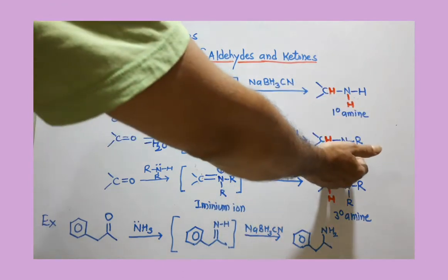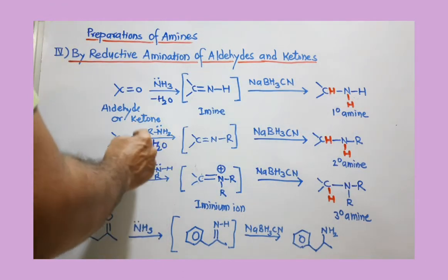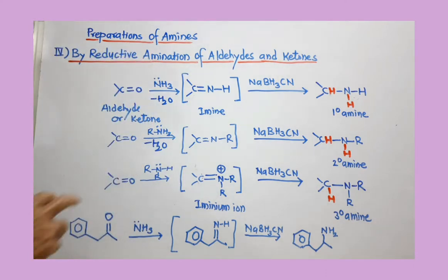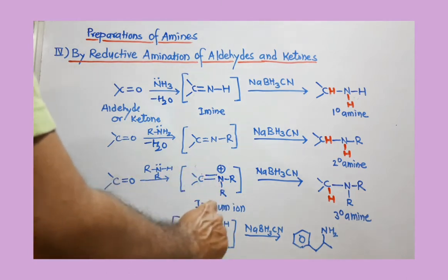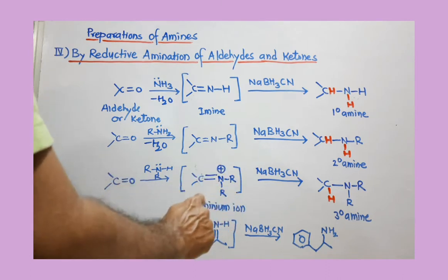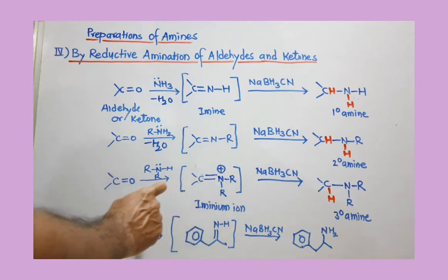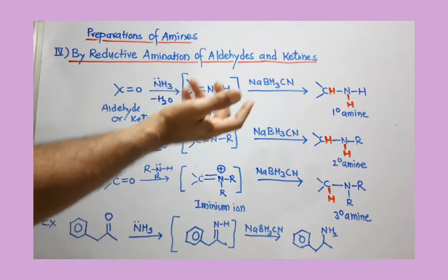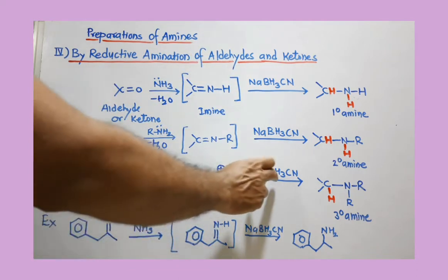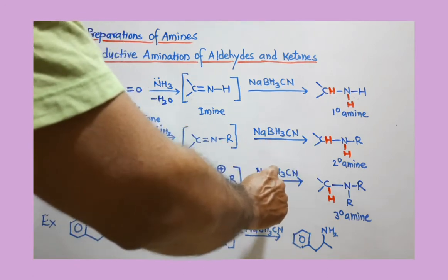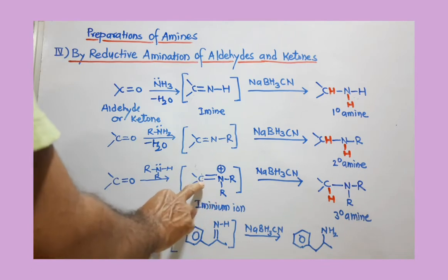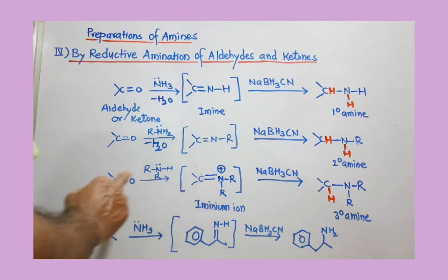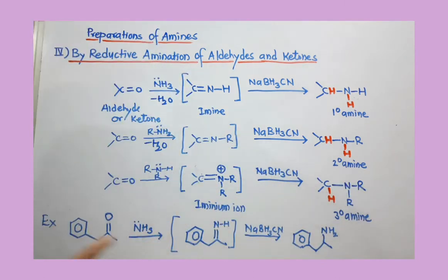This converts to a secondary amine — so aldehydes and ketones give secondary amines when a primary amine is used for reductive amination. When a secondary amine is used, an iminium ion is produced, which has a double bond and a positive charge. This iminium ion is subjected to reduction with sodium cyanoborohydride, and only one hydrogen is added over the carbonyl carbon, giving a tertiary amine.